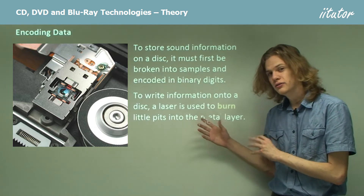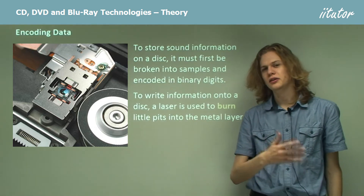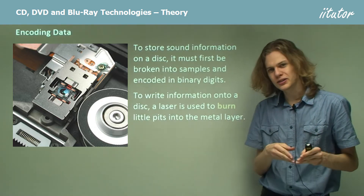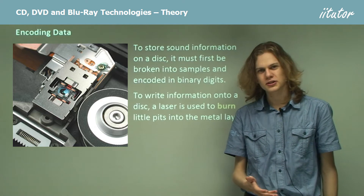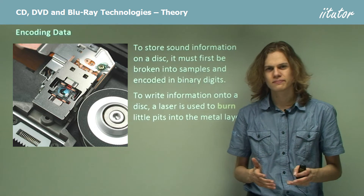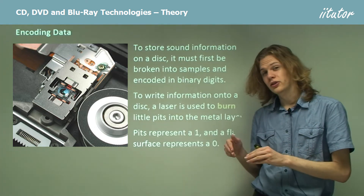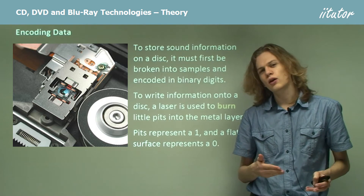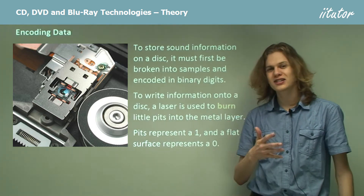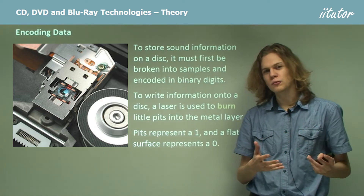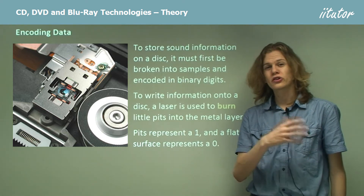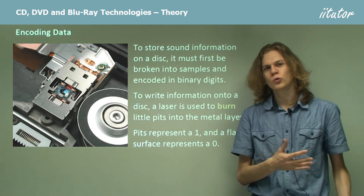In order to write the information onto a disk — whether it's a CD, a DVD, or a Blu-ray disk — we need to use a laser to burn little pits into the reflective layer of the disk. Each sort of disk uses a different sort of laser, and so the pits are different sizes. If we have a pit on the disk it represents a one; if we have a lack of a pit, that represents a zero. So we can burn a sequence of ones and zeros as a sequence of pits and not-pits.